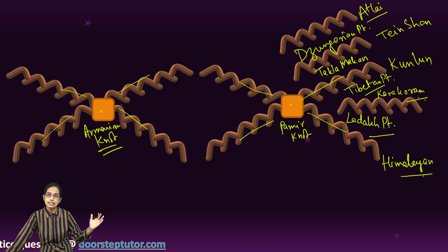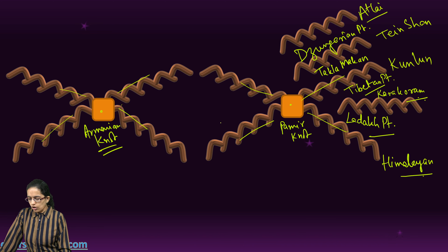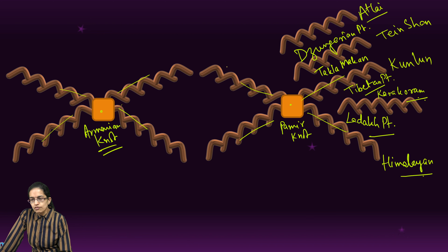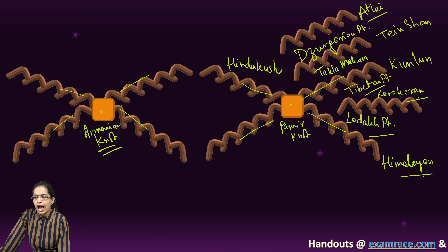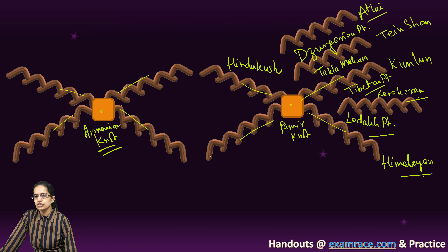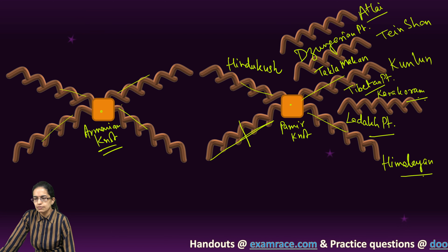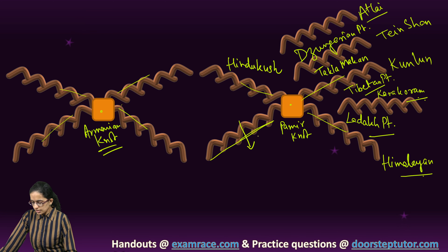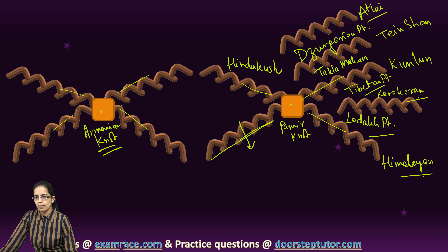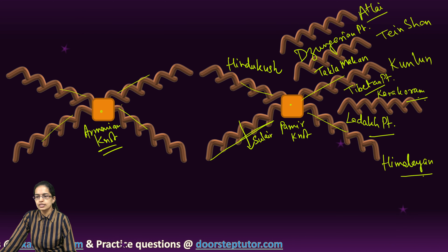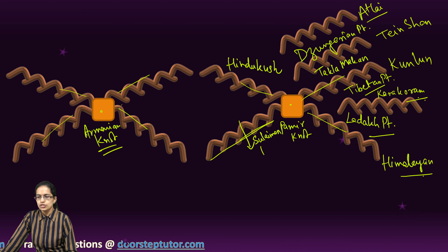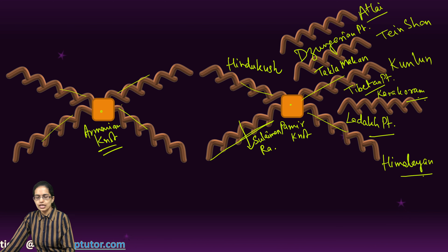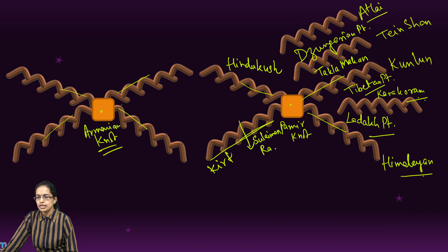This was towards the east of the Pamir knot. Coming on to the west of the Pamir knot — in the north you have the Hindu Kush mountain range, and in the south this region can be further subdivided into two: the one closer to the Pamir knot is known as the Sulayman mountain range, and next to that you have the Kirthar mountain range.